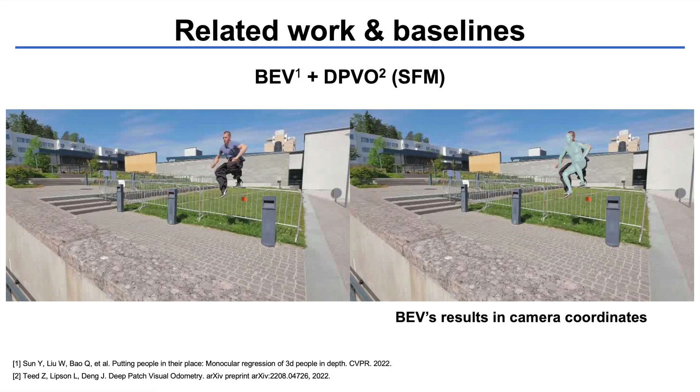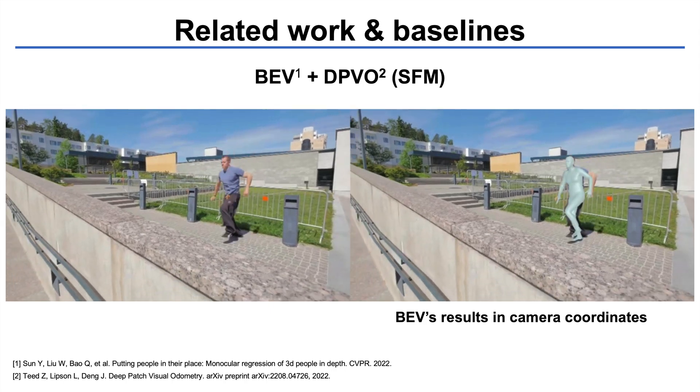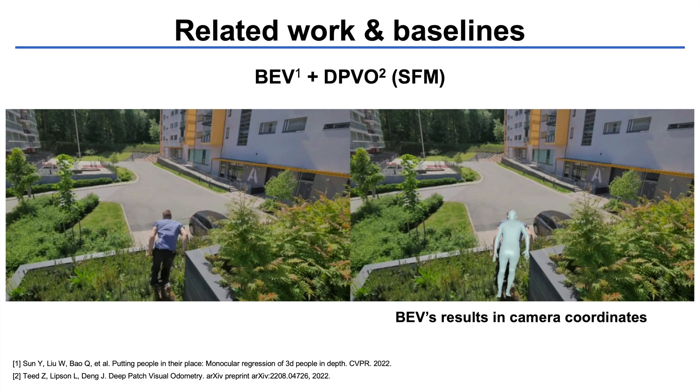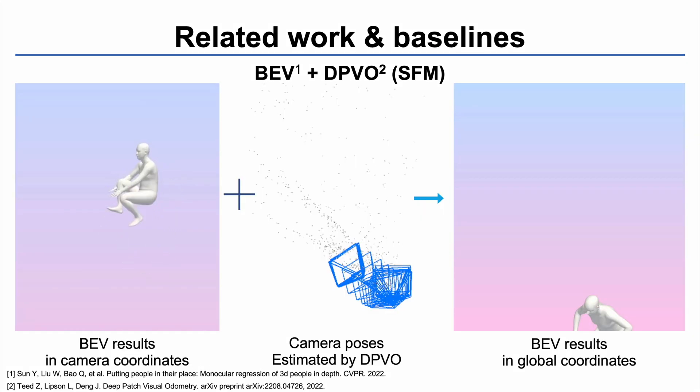We consider two baseline solutions for comparison. The first uses BEV to regress the 3D position of people in camera coordinates. We then estimate the camera poses using a SLAM method, DPVO, to convert the results to world coordinates.